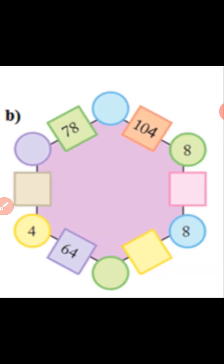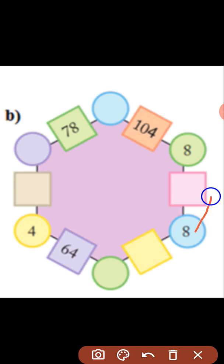Observe this magic hexagon. Let us start from the easy one that is 8 into 8. When you multiply you will get 64.